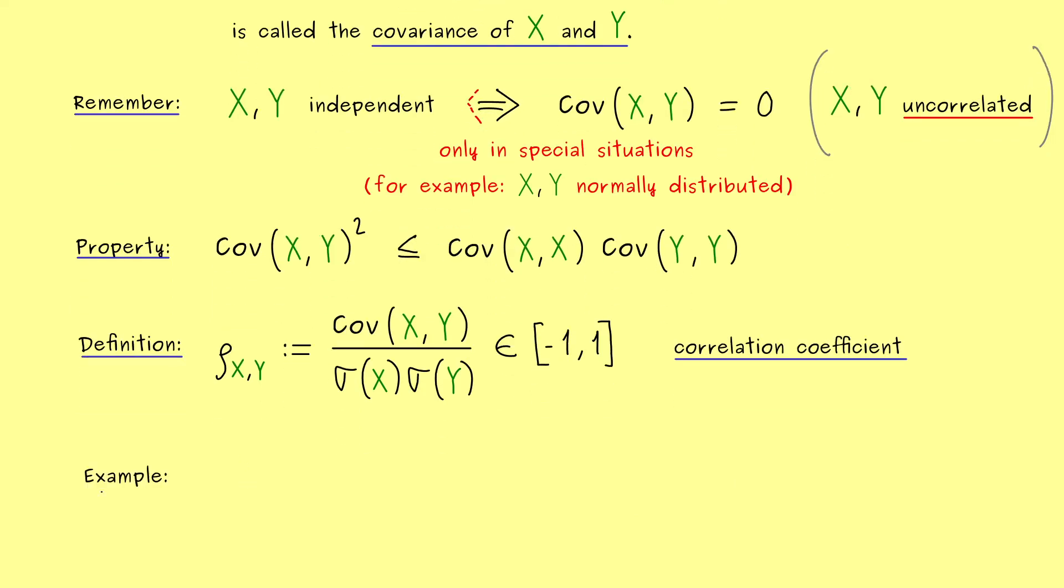In this video here now, I want to show you an example. Indeed, I want to show you that uncorrelated variables don't have to be independent. Also this means, for this example, we cannot use normally distributed random variables.